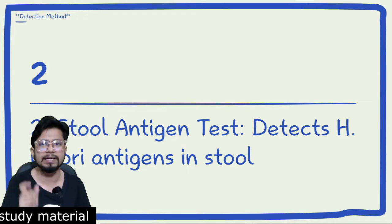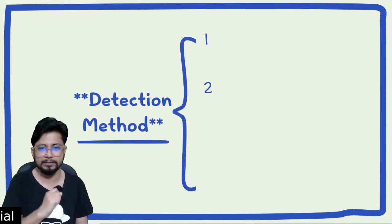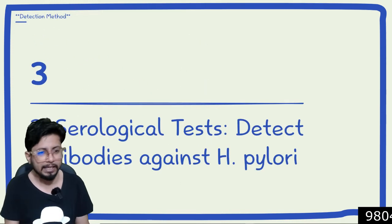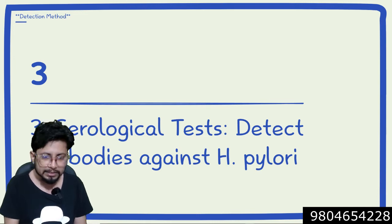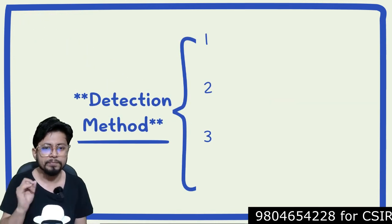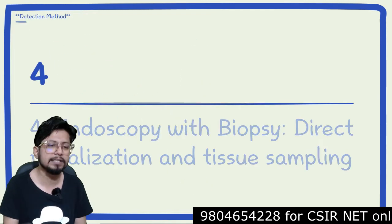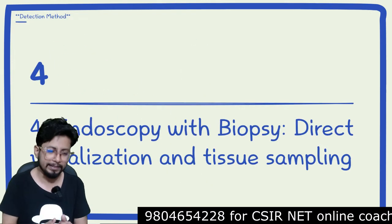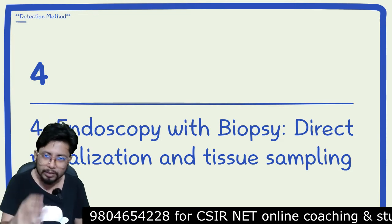The second detection method is the stool antigen test, which uses a specific kit to detect Helicobacter pylori antigens in the stool. The third method is the serological test, which detects antibodies against Helicobacter pylori in the blood.